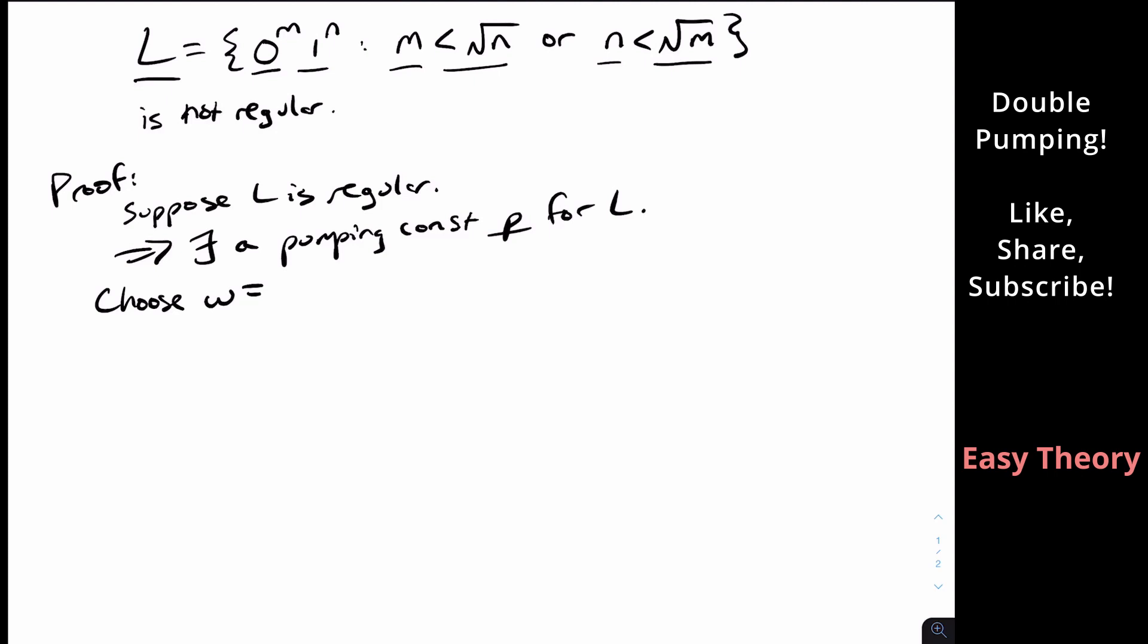So what should we pick here? Well, I could pick zero to the roughly square root of P minus one, one to the P. But I'm going to be a little bit smarter than that. What I'm going to do is I'm going to pick zero to the P squared plus one, one to the P.